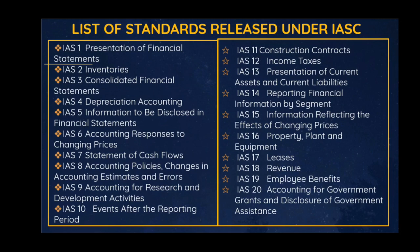Now let's look at the list of standards released by the defunct IASC. These include: IAS 1 Presentation of Financial Statements, IAS 2 Inventories, IAS 3 Consolidated Financial Statements, IAS 4 Depreciation Accounting, IAS 5 Information to be Disclosed in Financial Statements, IAS 6 Accounting Responses to Changing Prices, IAS 7 Statement of Cash Flows, IAS 8 Accounting Policies, Changes in Accounting Estimates and Errors, IAS 9 Accounting for Research and Development Activities, IAS 10 Events After Reporting Period, IAS 11 Construction Contracts, IAS 12 Income Tax, IAS 13 Presentation of Current Assets and Current Liabilities, IAS 14 Reporting Financial Information by Segment, IAS 15 Information Reflecting the Effect of Changing Prices, IAS 16 Property, Plant and Equipment, IAS 17 Leases, IAS 18 Revenue, IAS 19 Employee Benefits, IAS 20 Accounting for Government Grants and Disclosure of Government Assistance, IAS 21.